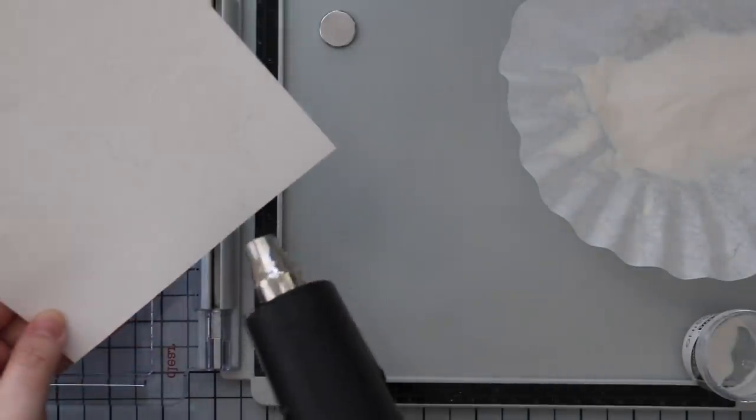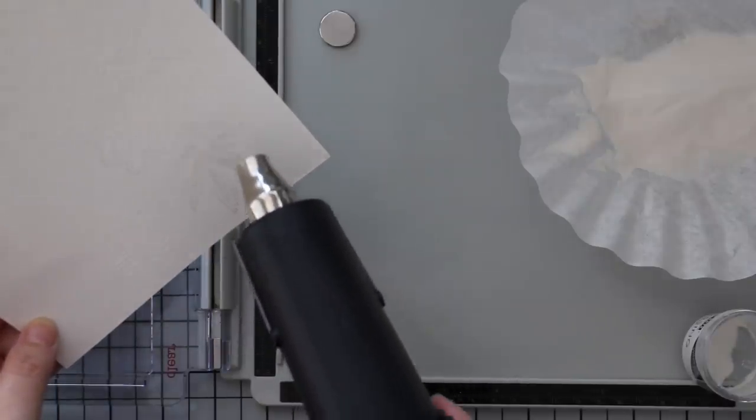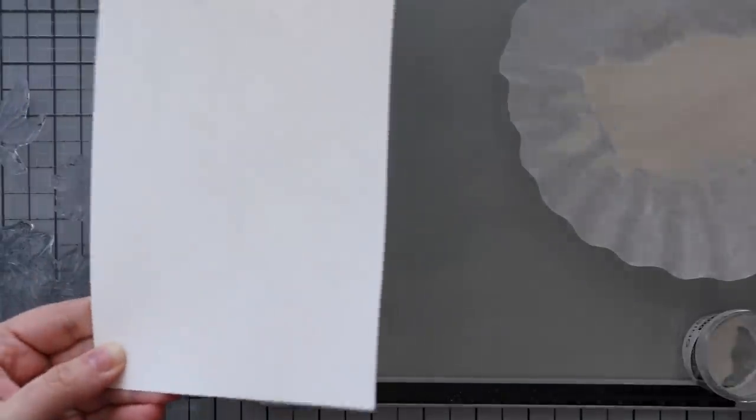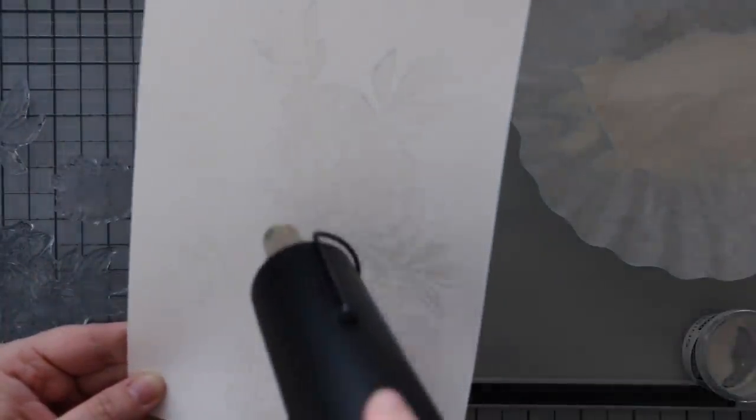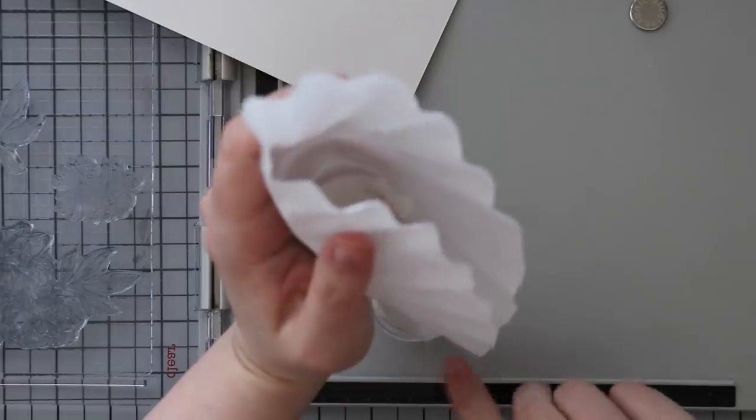Coating everything with the embossing powder. I didn't clean off the big stamp properly last time so it did pick up a little bit of black ink from before. With this embossing powder you can see those little darker areas, but I don't care. It's not even going to show up once I add all the color.